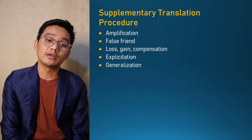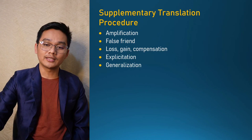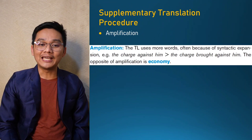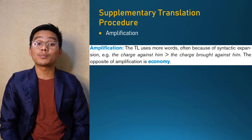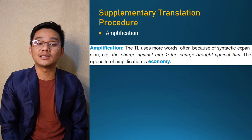Now we move to the supplementary translation procedures. According to Vinay and Darbelnet, these include amplification, false friend, loss, gain, compensation, explicitation, and generalization. Amplification is when the target language uses more words, often because of syntactic expansion. For example, 'the charge against him' becomes 'the charge brought against him.' The opposite of amplification is economy.